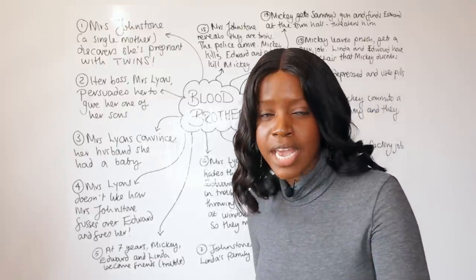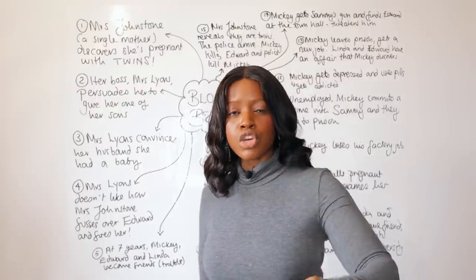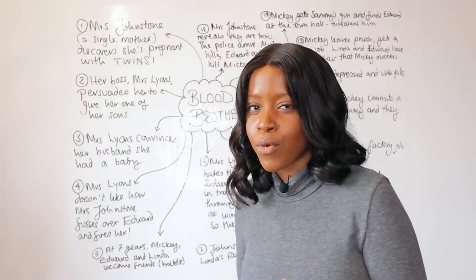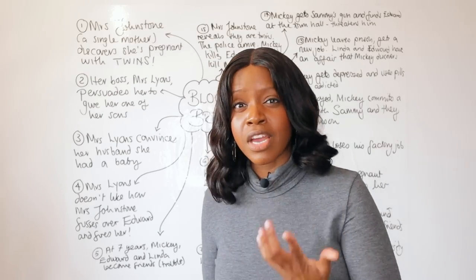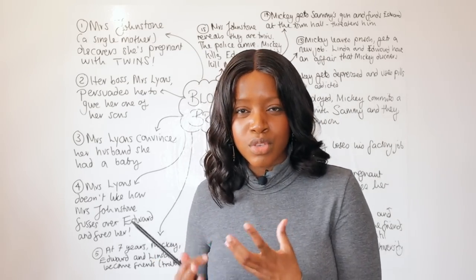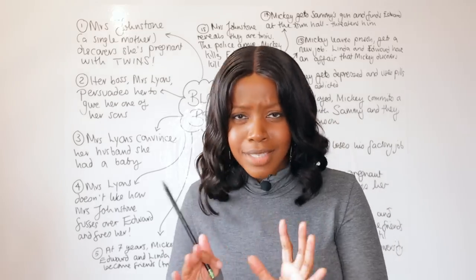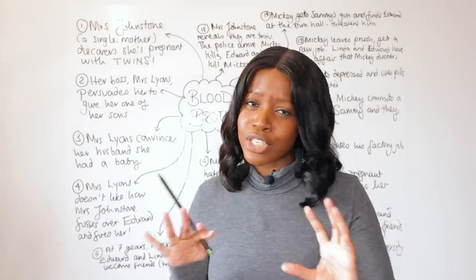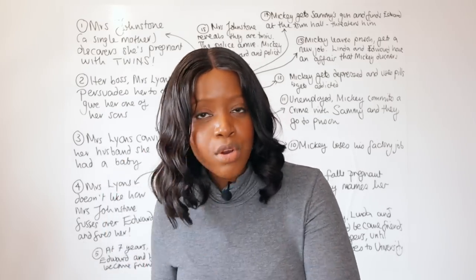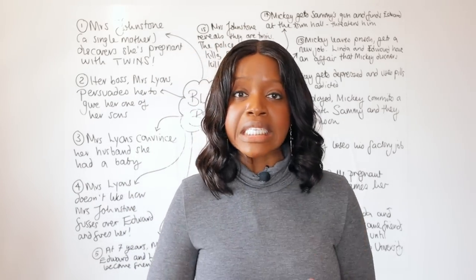They get into trouble when they start throwing stones at windows, and the police catch all the children. The police treat Mickey quite harshly — giving Mrs. Johnstone a stern warning — and also mention Mickey's older brother Sammy, who has a reputation as a bad boy. However, when the police speak to Mrs. Lyons about Edward's involvement, they are much kinder to her. This highlights how society treats Edward far more favourably as a middle-class child than Mickey as the working-class son of a single mother.